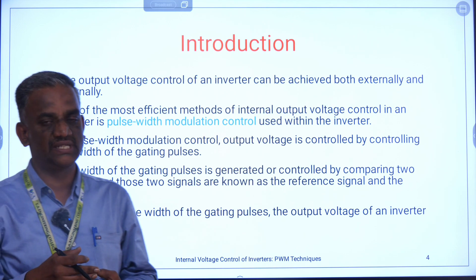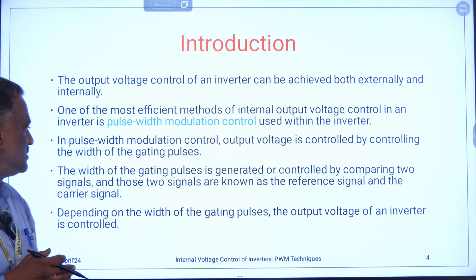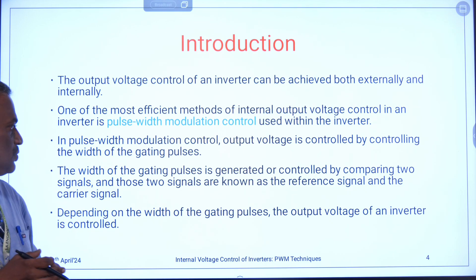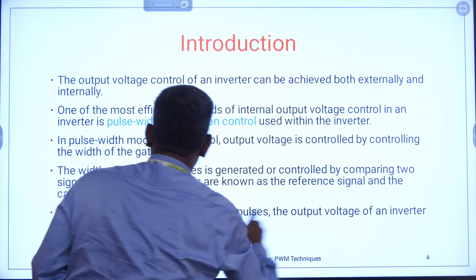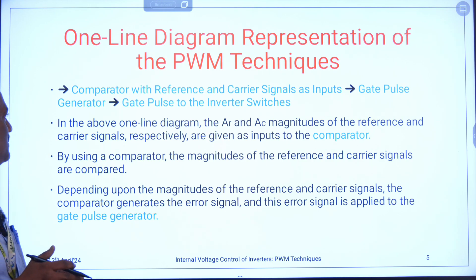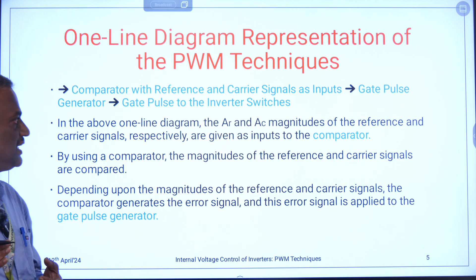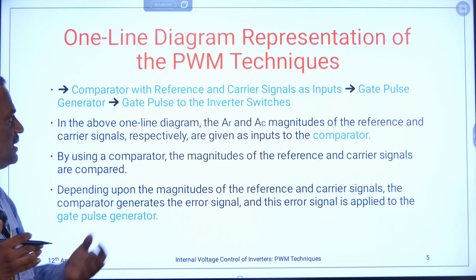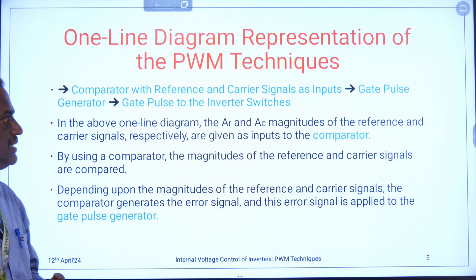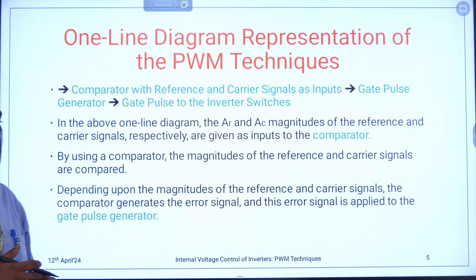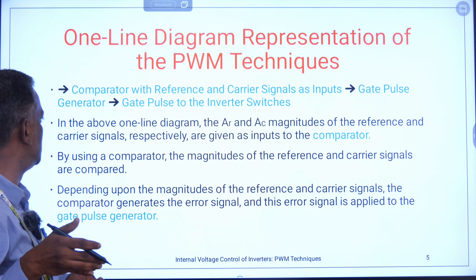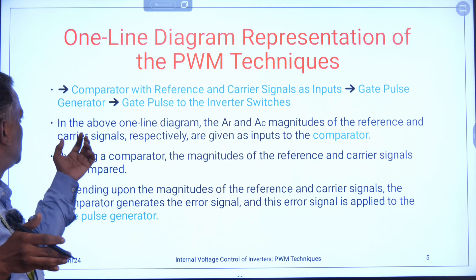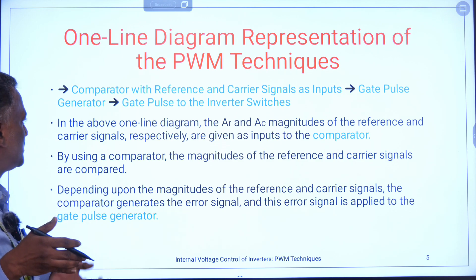How is this achieved? This is achieved by means of selecting two signals: one is the reference signal and the other is the carrier signal. These two signals will be taken into account, and then the output voltage of an inverter will be controlled. The principle is: I am taking a comparator where I will be giving two inputs — one is a reference input and the other is a carrier input. Both the inputs will be compared, an error will be generated, and that error will be taken to the gate pulse generator. The gate pulse generator will generate the pulses, and that pulse will be taken to the switches which are present in the inverter circuit.